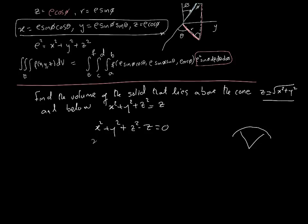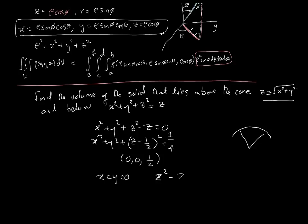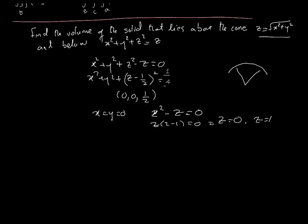Bringing z to the other side and completing the square, we end up with (z − ½)², which means the center of the sphere is (0, 0, ½). We also find the intersection points: when x = y = 0, we get z(z−1) = 0, so z = 0 and z = 1. So the sphere starts at 0 and goes up to 1, with center (0, 0, ½).